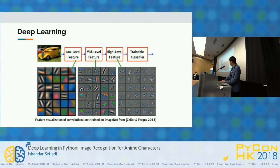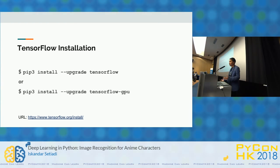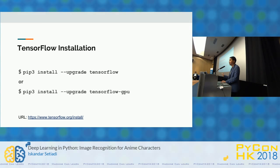Let's start with the first step: preparation. We need to prepare the environment and the data. I'm using TensorFlow here. If you're using Python, it's very easy to start — just pip install TensorFlow, or if you have a GPU, install the GPU-supported version. For the anime character recognition problem, I checked several websites. For example, Danbooru or Pixiv — there are around 35,000 registered characters. But the data is not that many: for the top 1,000 characters, they only have about 70 images per character.